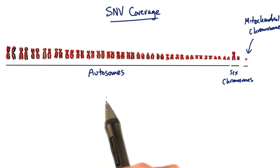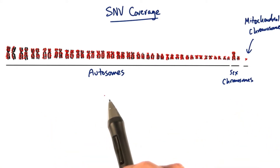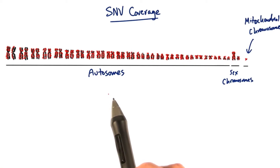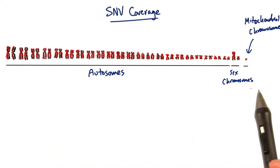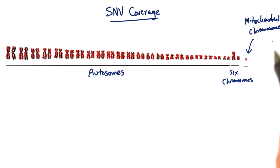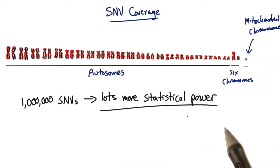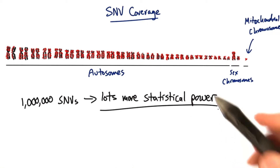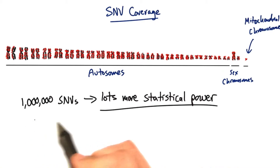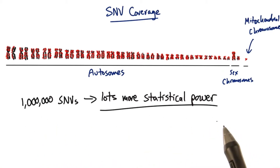The SNVs that 23andMe uses for genome comparisons are spread all over the chromosomes in the genome — the autosomes, the sex chromosomes, and the mitochondrial chromosome. Once the SNVs have been determined for an individual, we can determine the IBS score between any two people by sampling from a million positions in the genome.